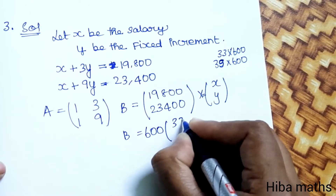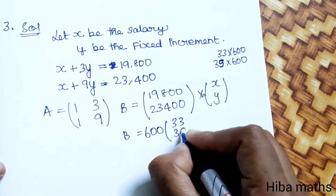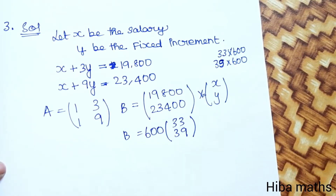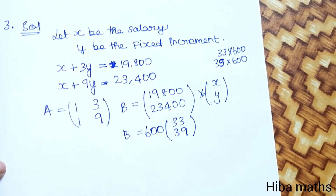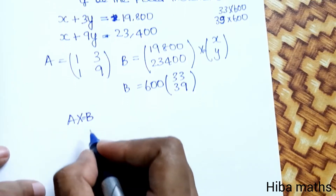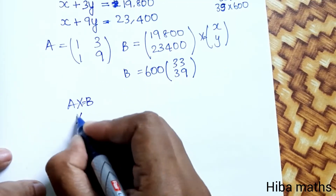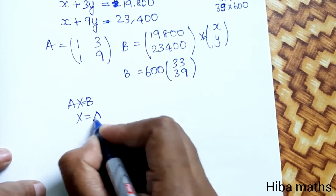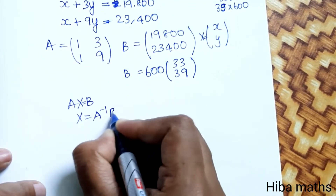We are going to verify the balance of 33 and 39, so the matrix multiplication is going to be easier. We will now find the inverse of A.